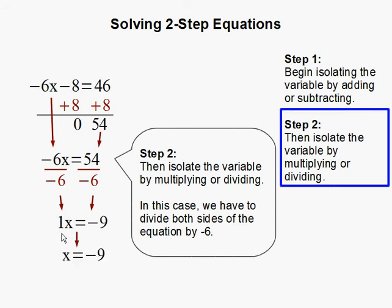And 1x is the same thing as x, because 1 times x is just x. So now that we have x by itself, our equation is solved. And x is equal to negative 9. And this completes our problem.